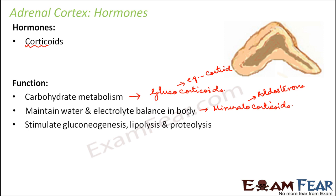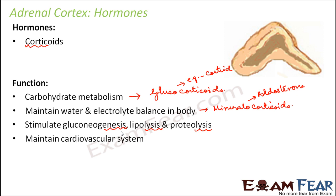The glucocorticoids stimulate gluconeogenesis, glycolysis, and proteolysis — that is the breakdown of carbohydrates, lipids, and proteins respectively. They also maintain the cardiovascular system, that is the heart and blood vessels — specifically the cortisols help maintain this. Additionally, cortisols stimulate RBC production, helping to produce more and more red blood cells.